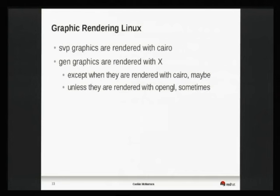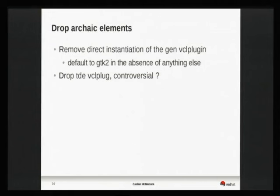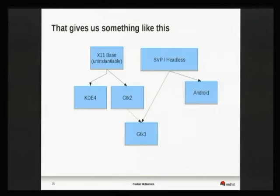What I'm thinking and proposing is that the top-level X11 gen VCL plug — we stop supporting that as something you can explicitly instantiate. Either you have GTK3, or KDE4, or GTK2. If you have raw X11, you just install GTK2 at least, so you default to GTK2 in the absence of anything else — that's as far down as we support. The TDE VCL plug: if we had never implemented KDE3 support, I don't think TDE support would exist. I'm suggesting the TDE stuff is really a dead end and we should drop TDE support. That leaves the X11 base — the gen one — still existing but not instantiable, staying as the base for KDE4 and GTK2.